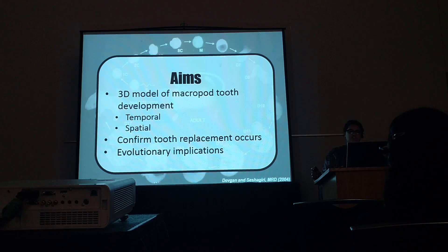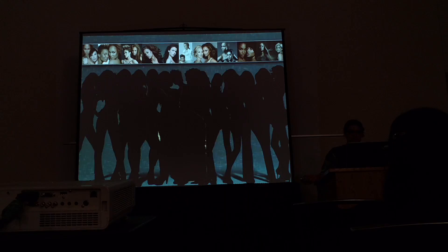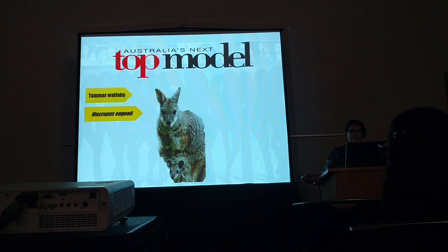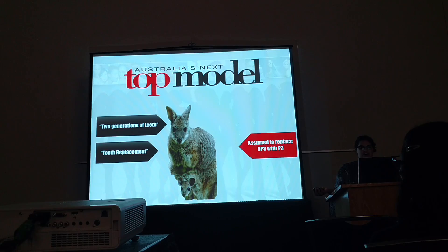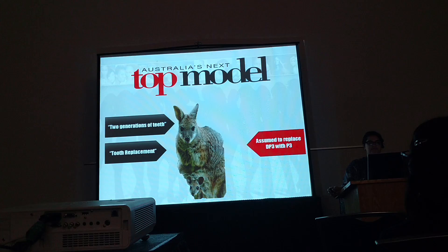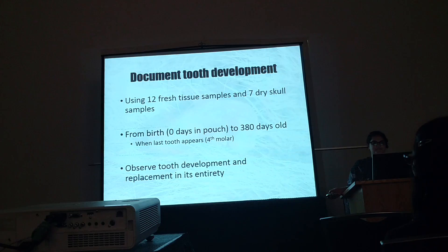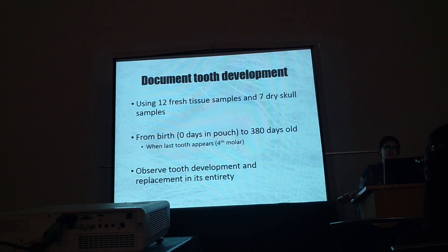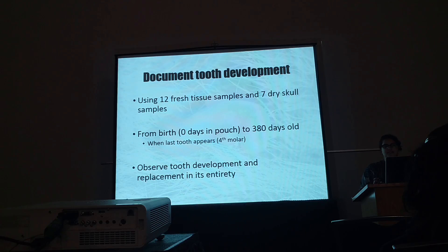Introducing Australia's next top model organism: the Tamar Wallaby. Why is it a better model than, say, a mouse? Mice don't have two generations of teeth — they only have one set of teeth, so they don't have a tooth replacement event that you can study. Tamar Wallabies have been observed to have this, and it's assumed that they replace that DP3 with a P3. To document the tooth development pattern, I used 12 fresh tissue samples and 7 dry skull samples from the museum, looking from 0 days — literally born out of the uterus that day, crawling up to the pouch — all the way to 380 days when the last tooth appears.